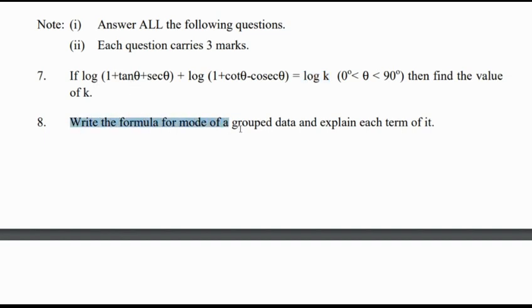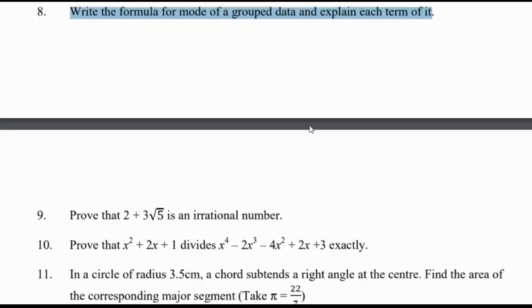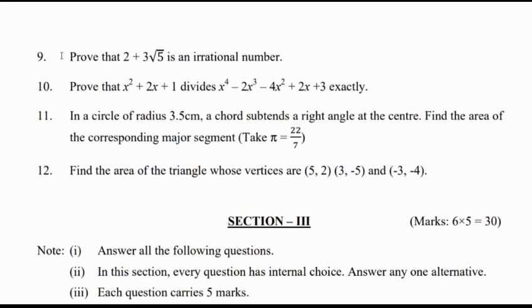Question 8: Write the formula for the mode of grouped data and explain each term in it. Question 9: Prove that 2 + 3√5 is an irrational number. This is an expected question from the real numbers chapter.